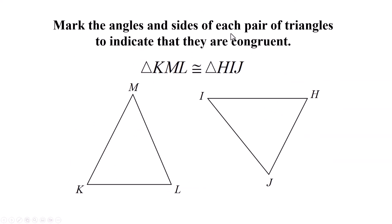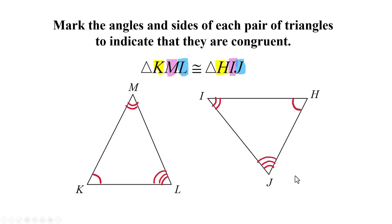This problem is different: mark the angles and sides of each pair of triangles to indicate they are congruent. Triangle KML is congruent to triangle HIJ. K has to be congruent to H, M to I, and L to J — so let's mark that up. Put one mark on K and H, two marks on M and I, and then L goes with J. For sides: K to M must be congruent to H to I, and M to L must be congruent to I to J.